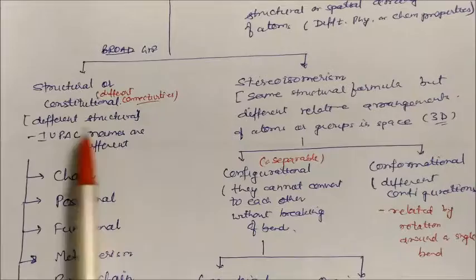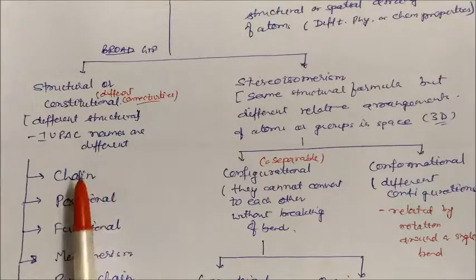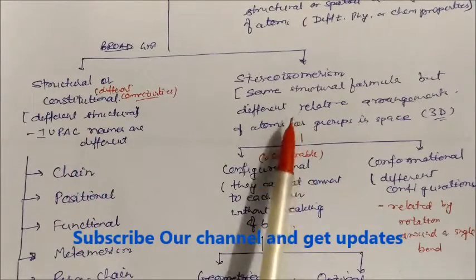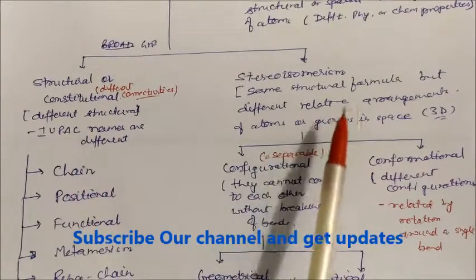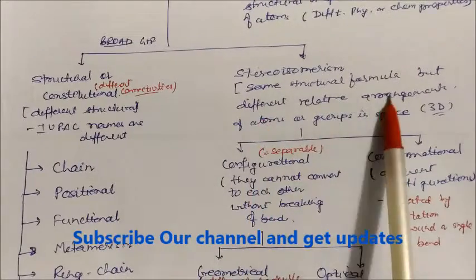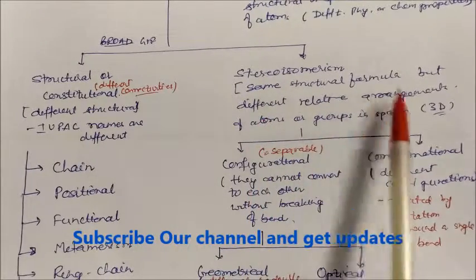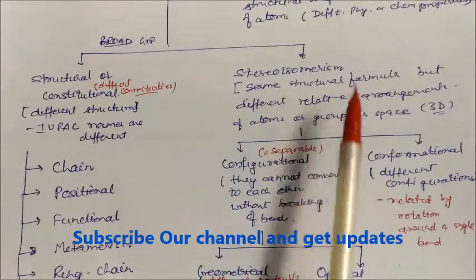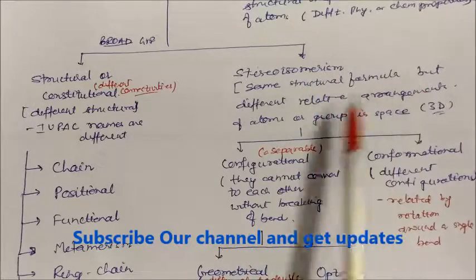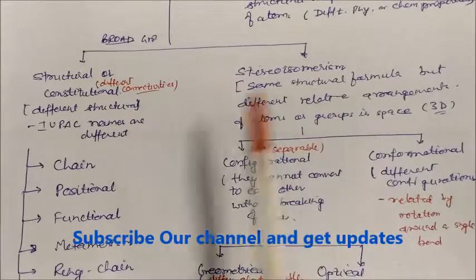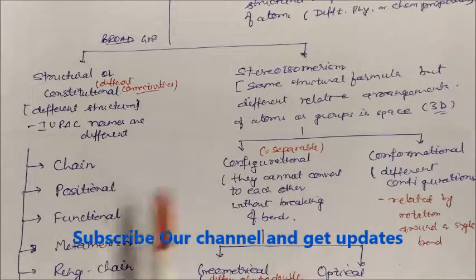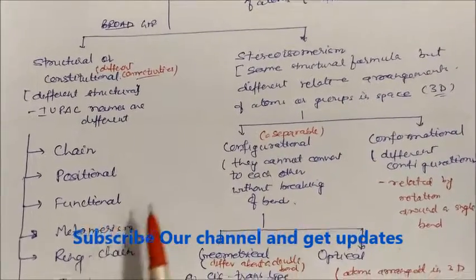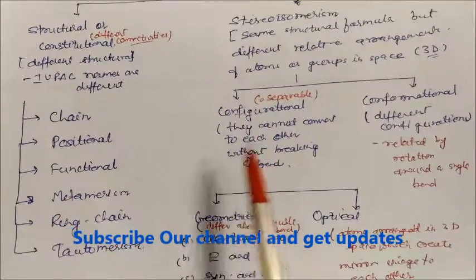In structural isomers, IUPAC names are quite different and expressed in different ways. But in stereoisomers, the IUPAC names are almost the same because they differ only in spatial arrangement, not in structural arrangement. We will discuss all these arrangements one by one.